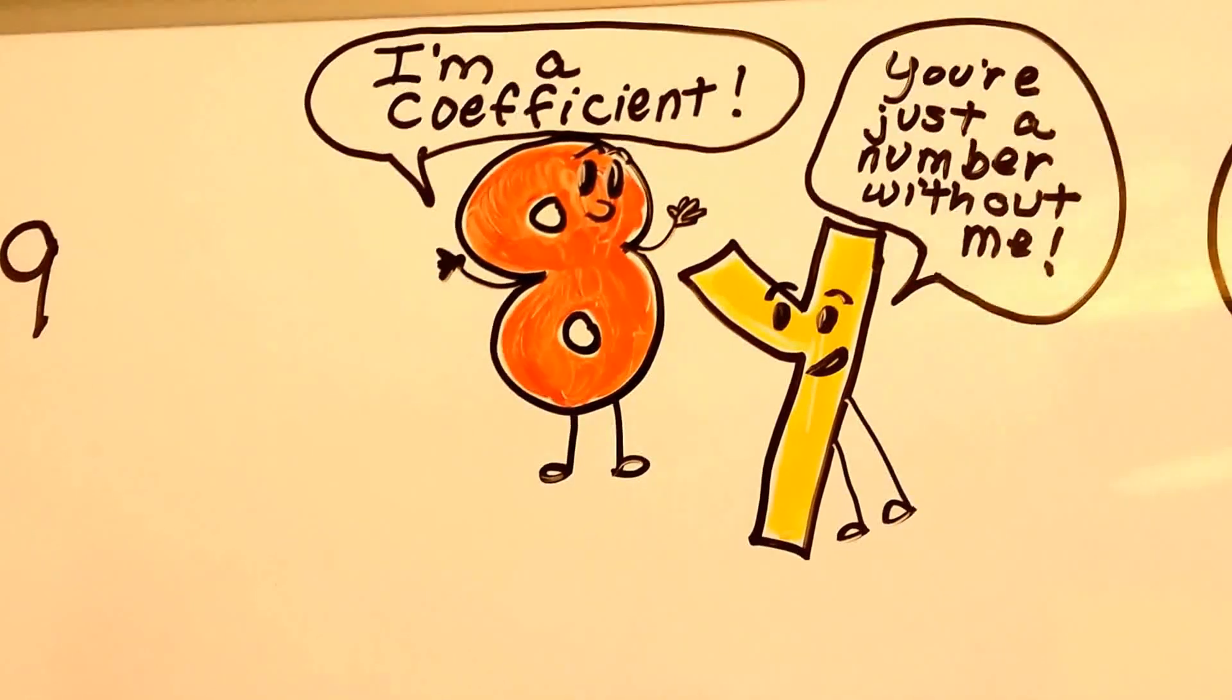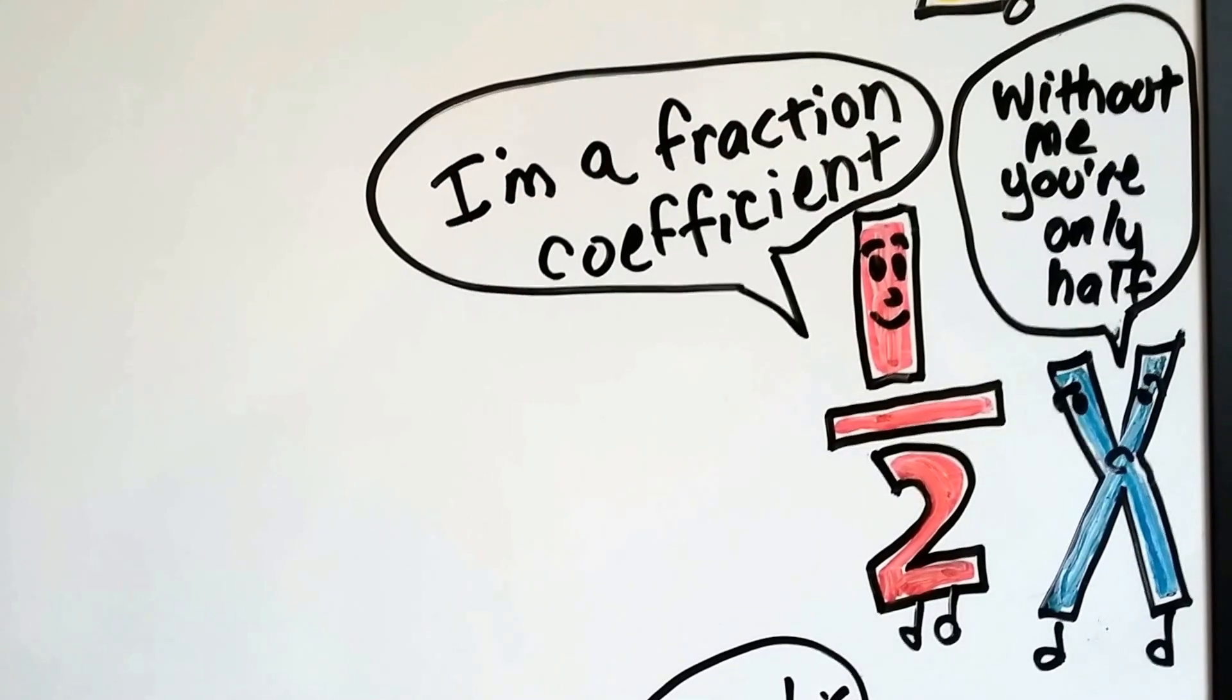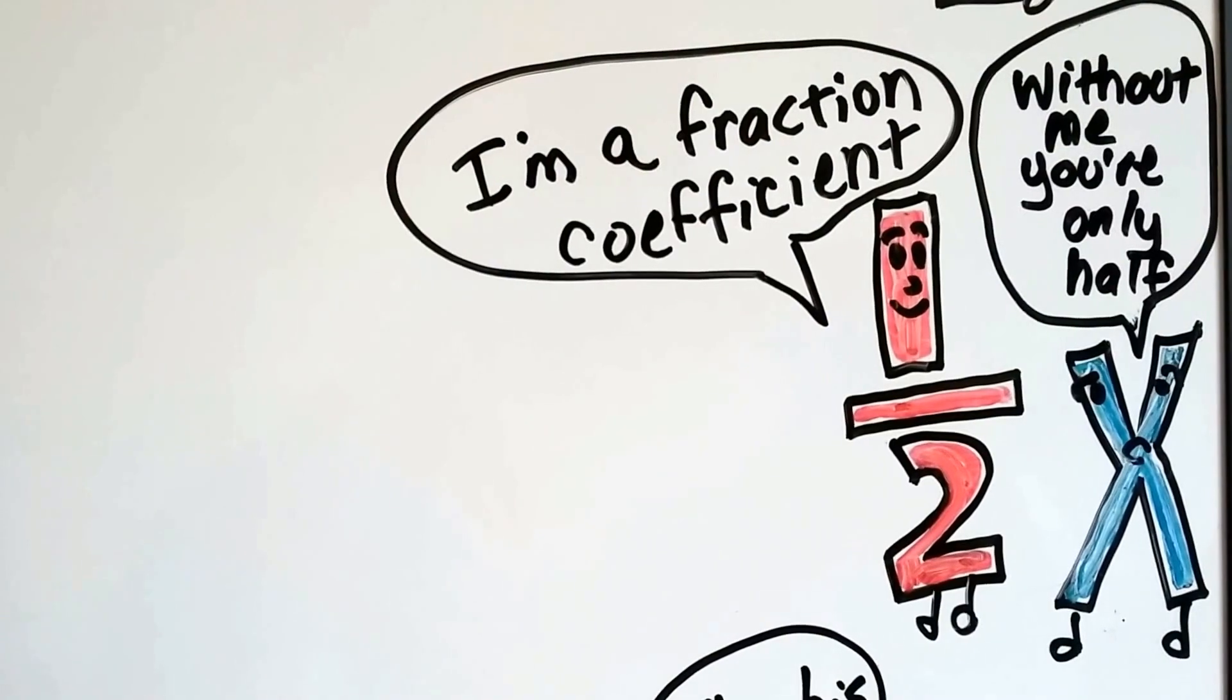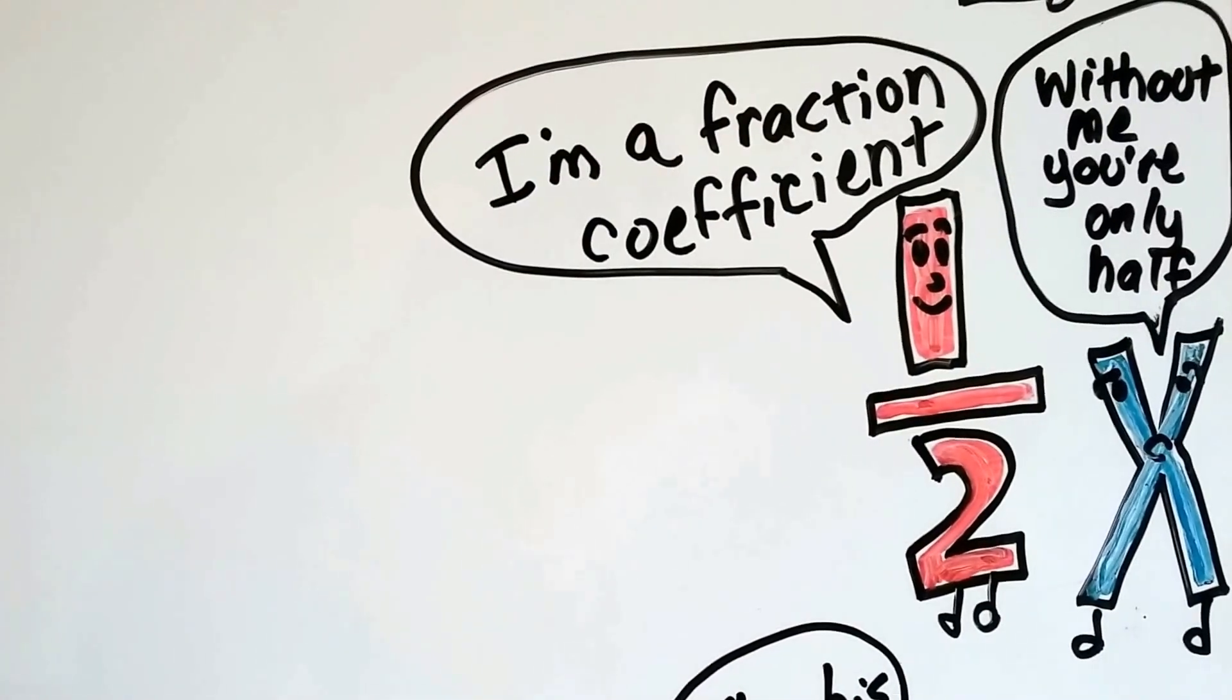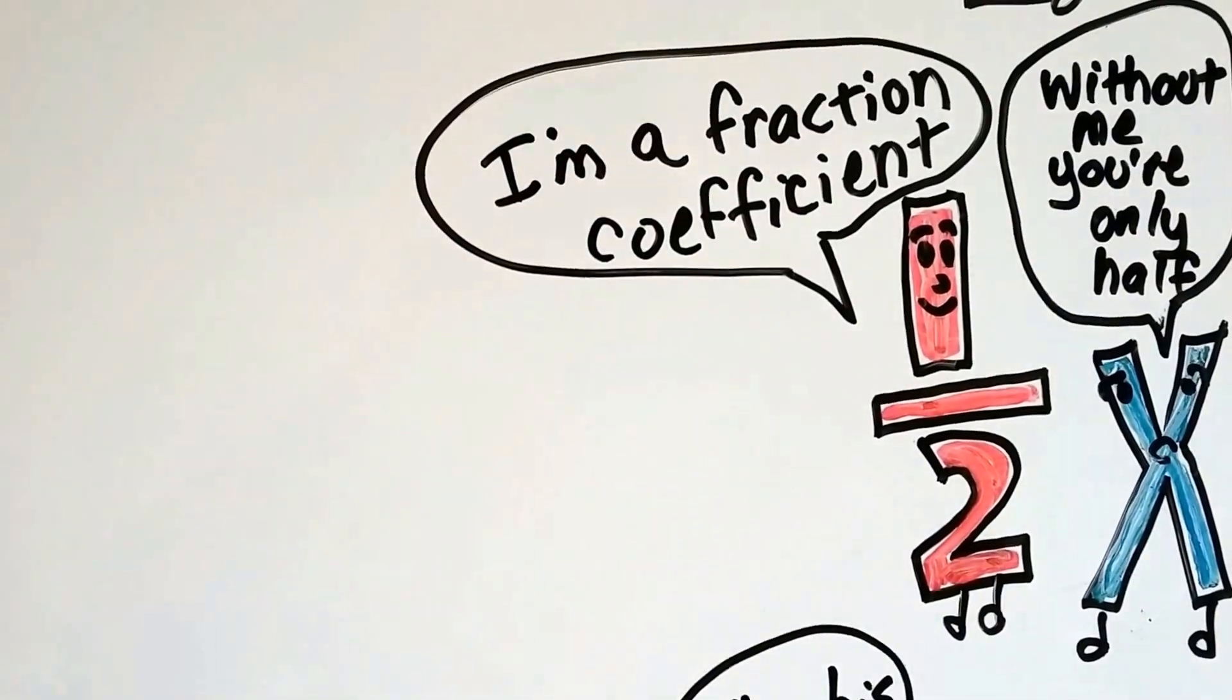So, sometimes we can have a fraction as a coefficient. Sometimes there's a fraction in front of a variable. It's a fraction coefficient. If the variable left, he would just be a regular fraction. But because that variable is there, he's a fraction coefficient.